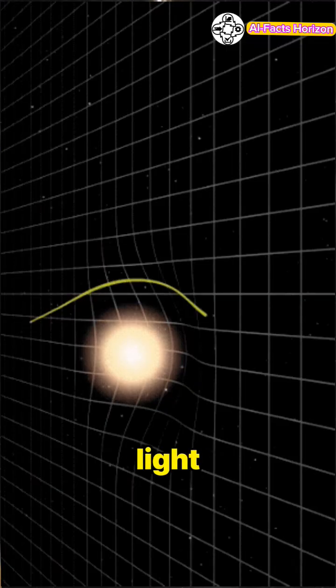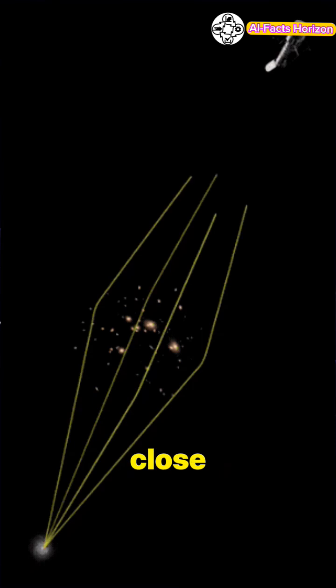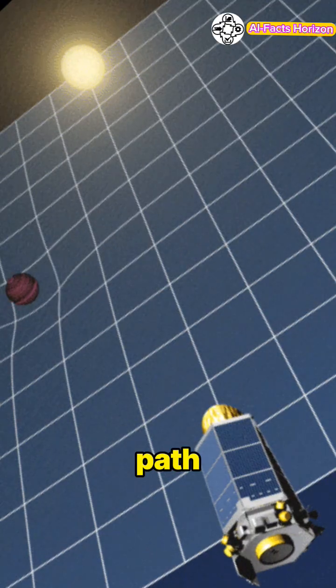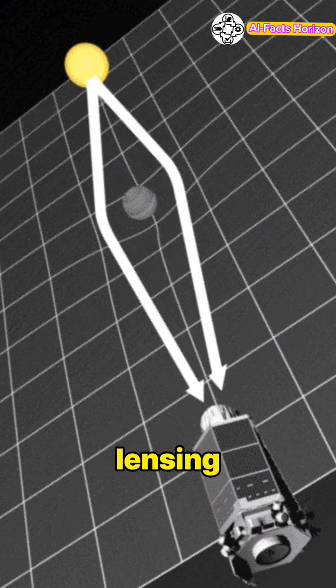Now think about light as a straight line. When this light passes close to that massive object, the warped space bends the light's path. This phenomenon is called gravitational lensing.